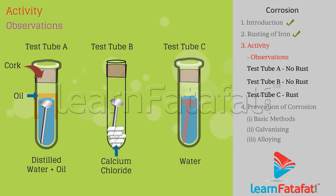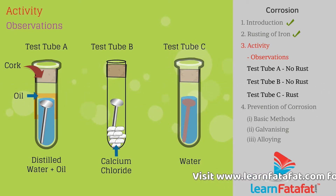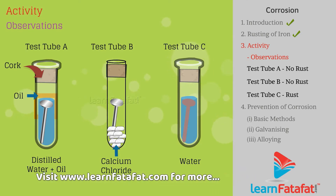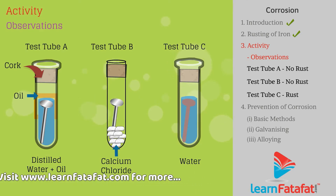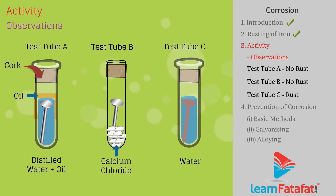Observations. After 3 days, it is found that the nails in test tube A and test tube B have no rust. However, rusting of nails takes place in test tube C. In case of test tube A, nails are exposed to only water, and in case of test tube B, nails are exposed to only air.